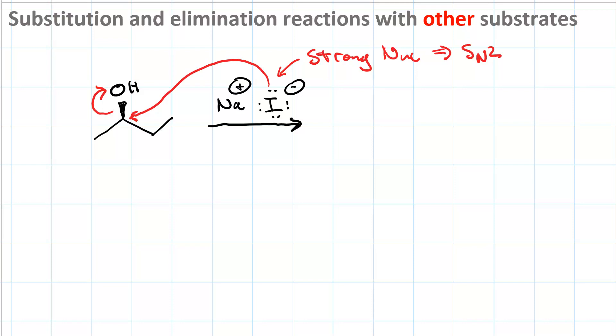Wait, loss of a leaving group can't happen because hydroxide is one of the world's worst leaving groups. So using sodium iodide is not going to work on an alcohol.